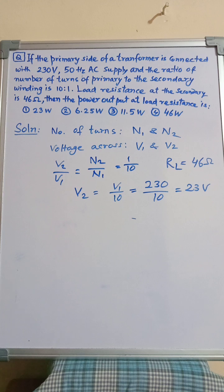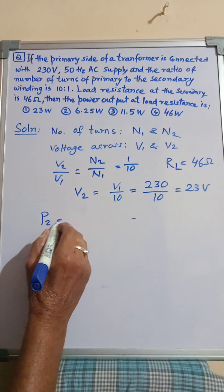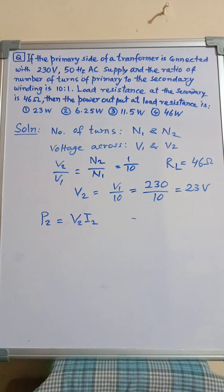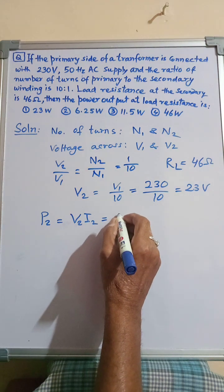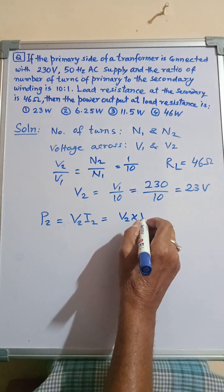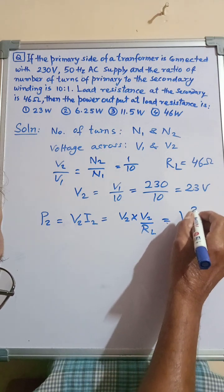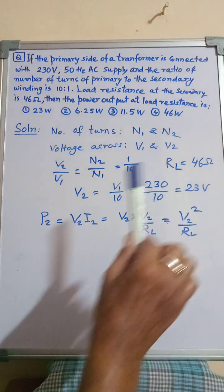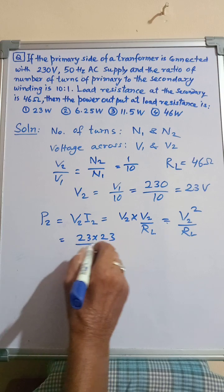We can write the power output at load resistance P2 is equal to V2 into I2, but we have I2 is equal to V2 by RL. Therefore we can write V2 into V2 by RL which is equal to V2 square by RL.